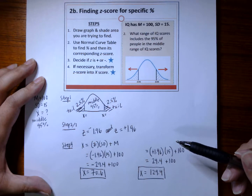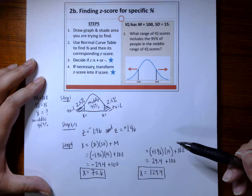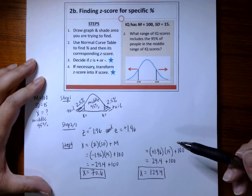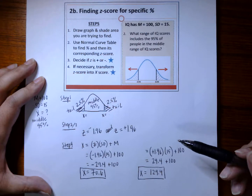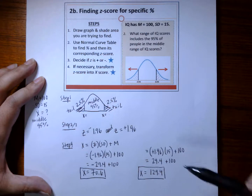Whew — that problem was tough! This practice example is a transition into how we will use z-scores, proportion, and probability when conducting inferential statistics.